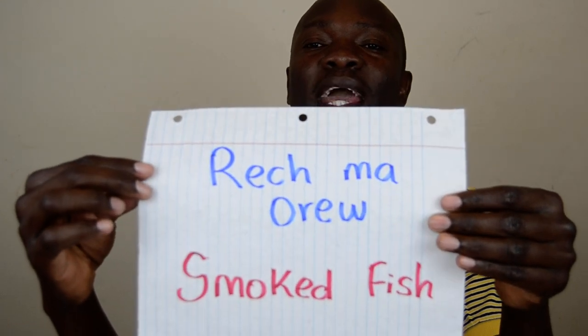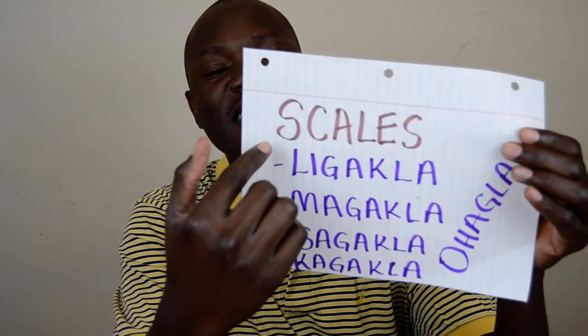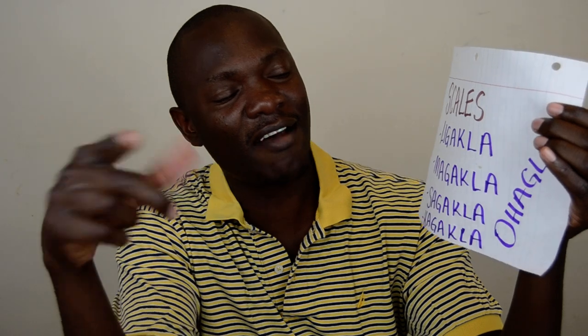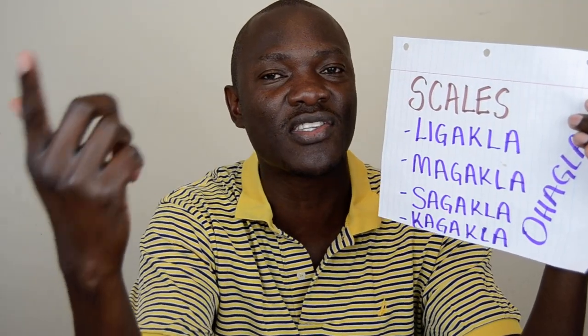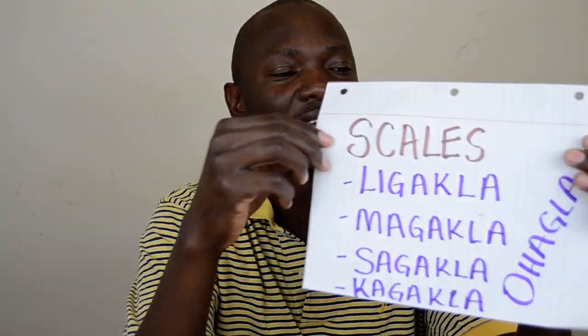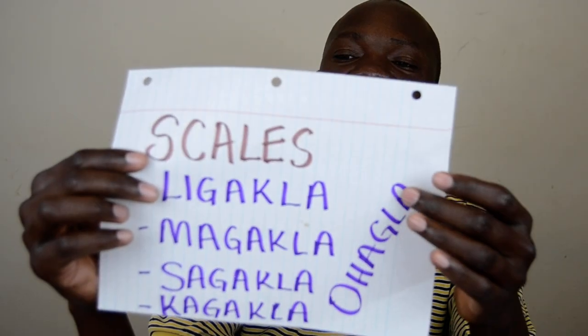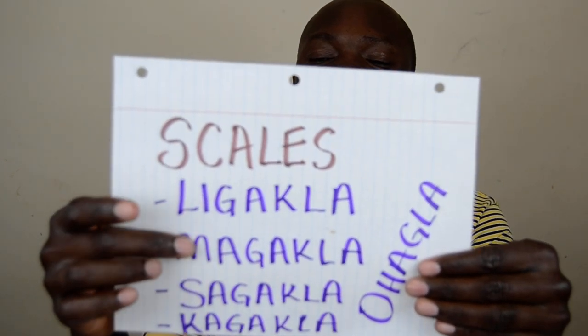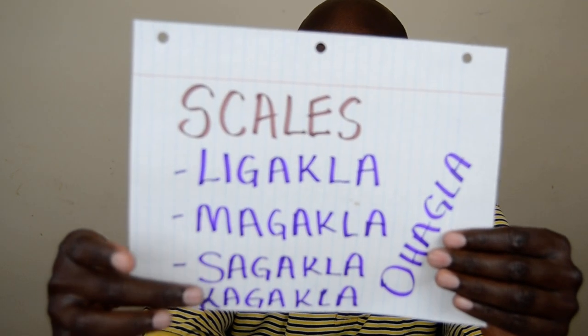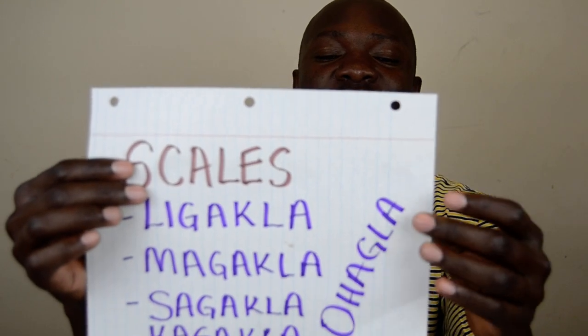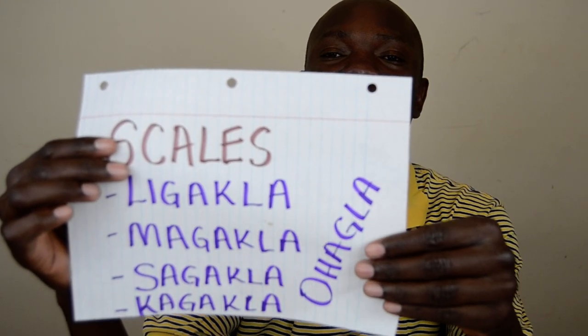And finally, scales — fish scales — have a lot of versions in Luo, but the most common one is called 'Ohagla.' There is also Ligakla, Magakla, Sagakla, and Kagakla, but the most common one is Ohagla. Those are the fish terminology. Now we go into the different types of fish.